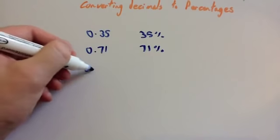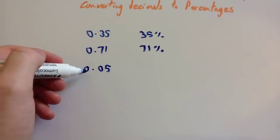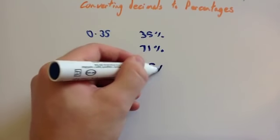If you've got one like 0.05, well, if you want to change that to a percentage, again, you move the decimal place twice, 1, 2, and then that would be 5%.